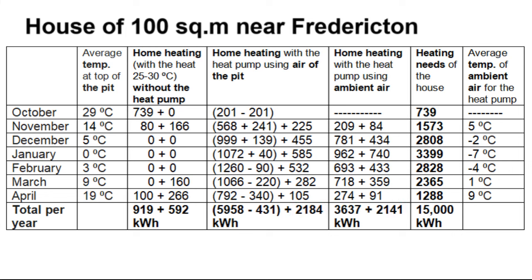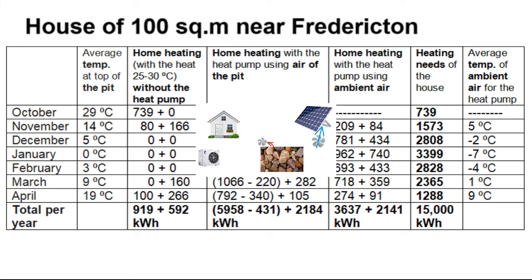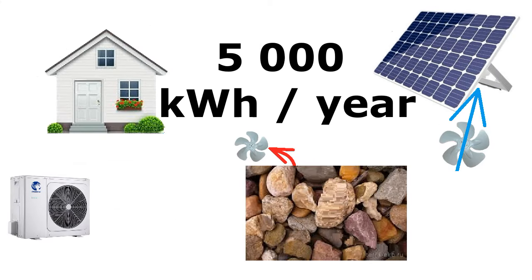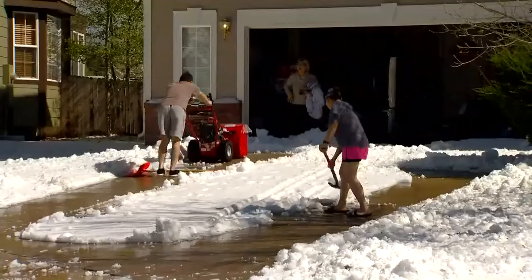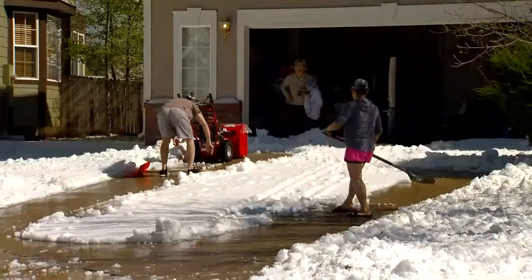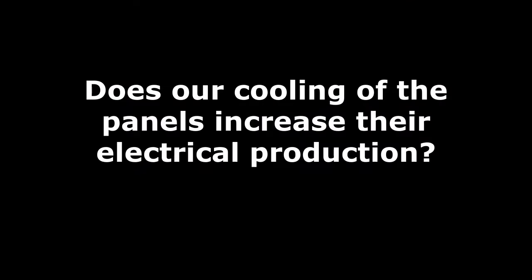We must add this electricity to the electricity consumption of both heat pump modes. Therefore, we come to the conclusion that the total annual electricity consumption of this entire system is approximately 5000 kWh, but it will be several times less in a warmer and sunnier climate.